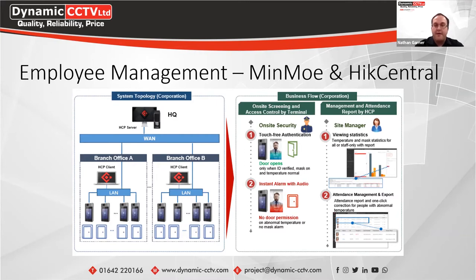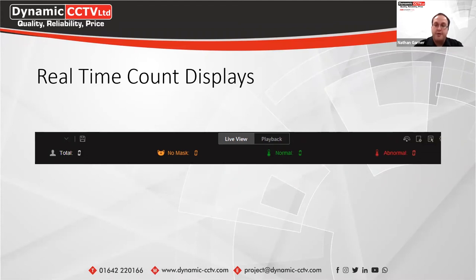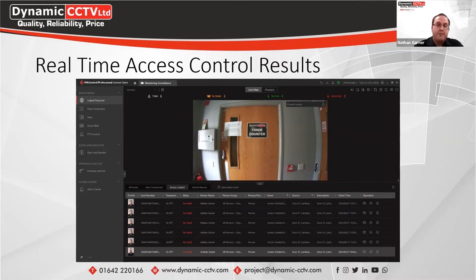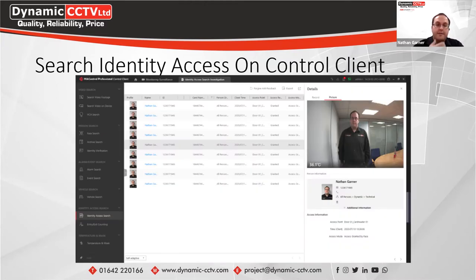Users can generate reports — temperature measurement statistics, mass detection, lateness, overtime, general hours worked — available as daily, weekly, or monthly reports. The control client gives a real-time count display: along the top it shows whether a mask is being worn, normal temperatures, and any abnormal temperatures. Along the bottom you get real-time access control results showing detections from the terminal, including the temperature detected, whether a mask was worn, and the person's name if they're uploaded to the system.